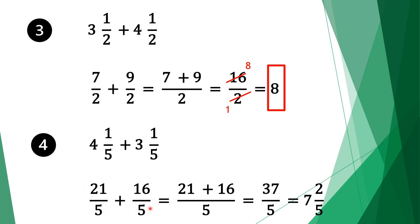We take the common factor of 5. 5 divided by 5 is 1, 1 times 21 is 21. Move along the plus sign. Do the same for the second fraction: 5 divided by 5 is 1, 1 times 16 is 16. We add 21 and 16 which is 37, and bring the 5 as the denominator. This can't be simplified further, so our result is 37 over 5. But this is an improper fraction, so our solution as a mixed fraction is 7 and 2 fifths.